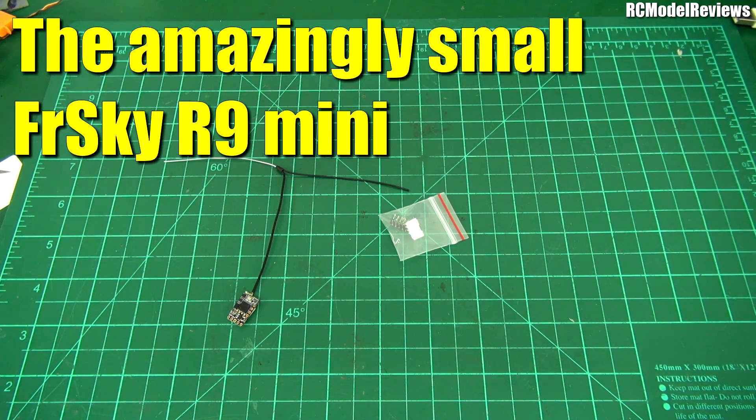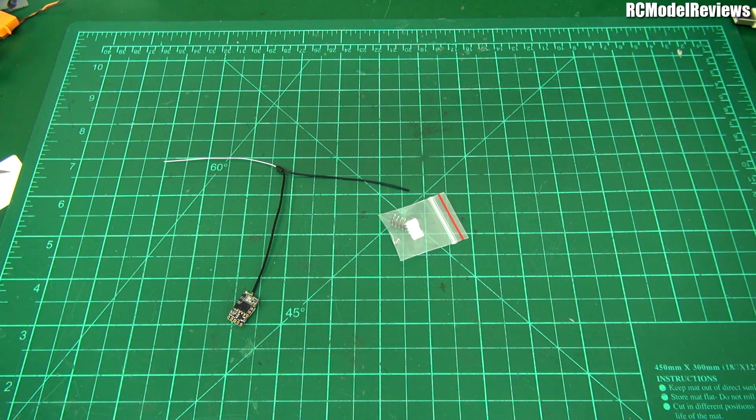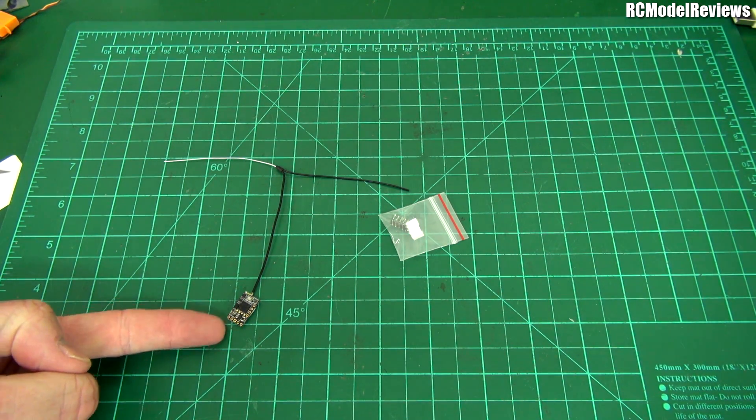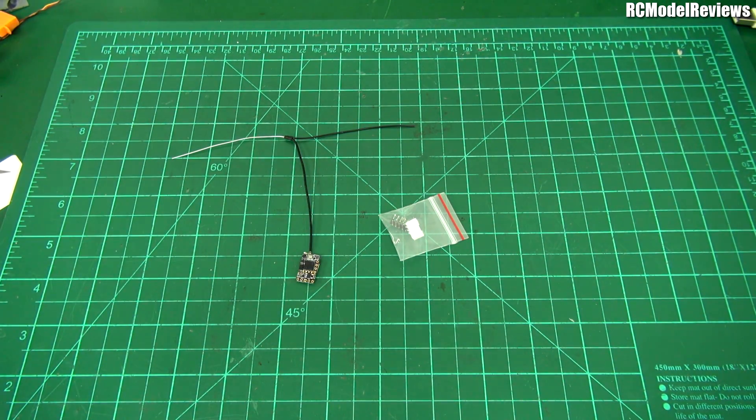G'day and welcome back to RC Model Reviews. Today I'm looking at the FreeSky R9 mini, probably the smallest receiver I have in the entire workshop. It's very, very small - tiny actually.